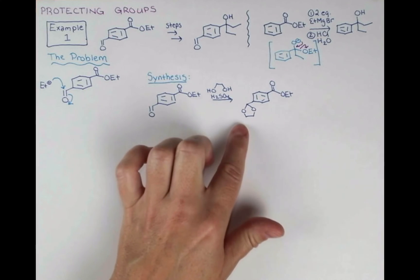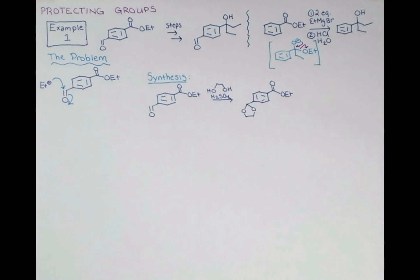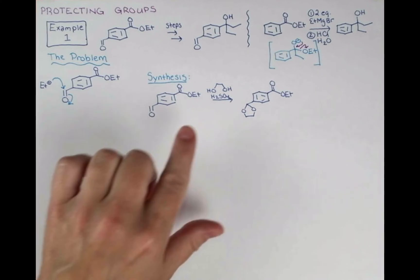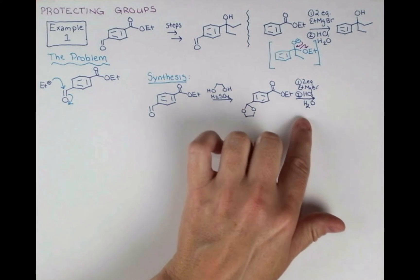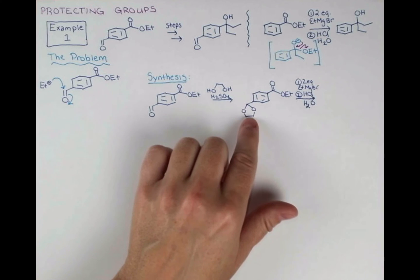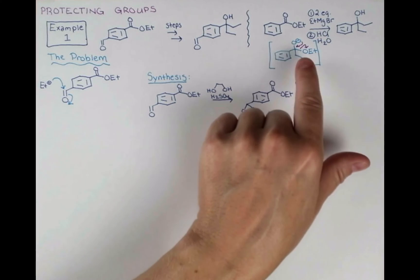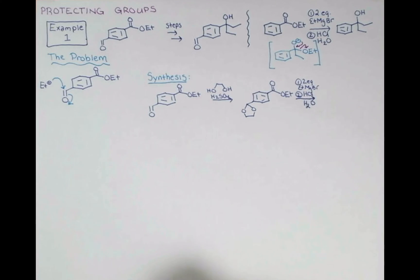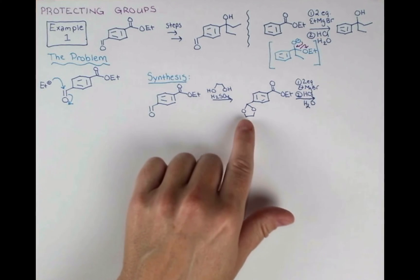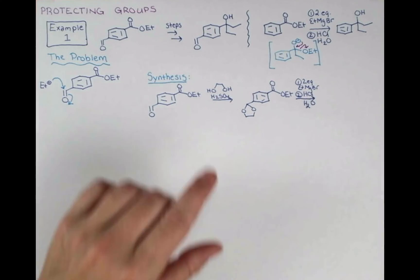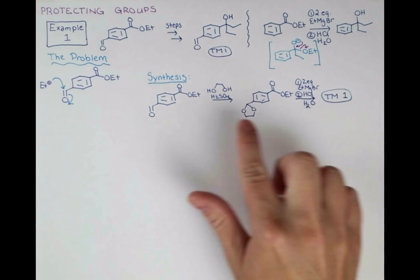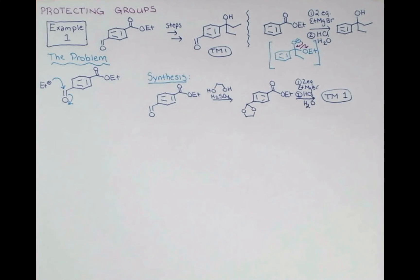The acetal is a base stable protecting group that is removed in acid. So we put it on using acid, then we can remove it by acidic hydrolysis. Since it's base stable, we can now apply these conditions above, and the acidic conditions of our workup might just be enough to remove this protecting group too. So in this first step, the reaction happens where we add in our ethyl group twice, and then when we're protonating this, we might be able to just heat it up and remove our protecting group at the same time. Let's call this target molecule 1, and we form that by this sequence using the acetal protecting group.